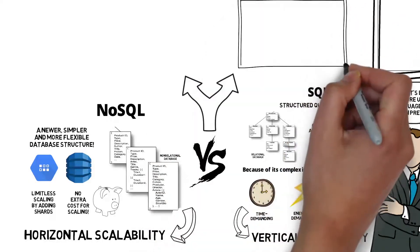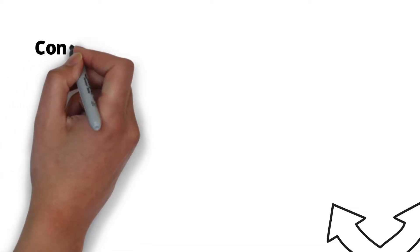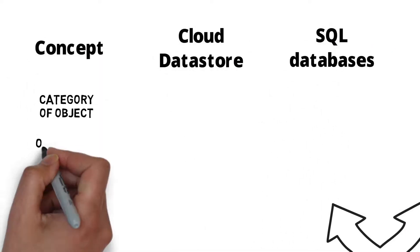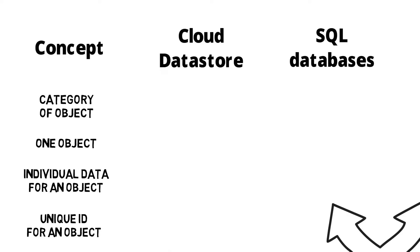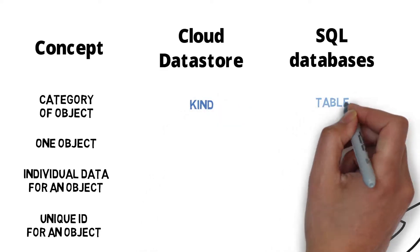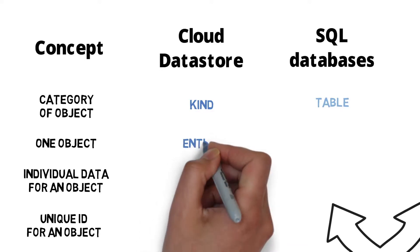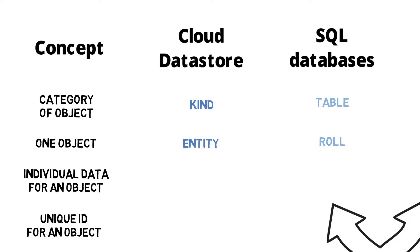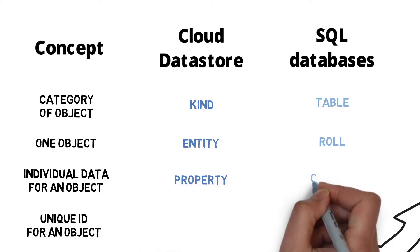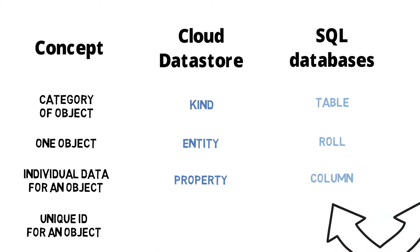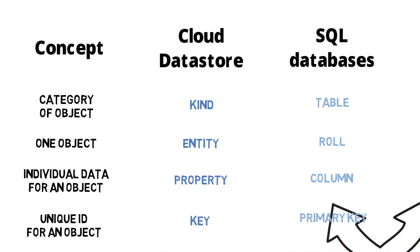Let's draw a comparison table across three columns: concept, Google Cloud Datastore, and SQL relational databases. The category of an object is referred to as a 'kind' in Google Cloud Datastore and a 'table' in a relational database. A single object is an 'entity' in Datastore and a 'row' in SQL. Individual data for an object is a 'property' in Datastore and a 'column' in SQL. And finally, our unique ID is a 'key' in Datastore and a 'primary key' in SQL.